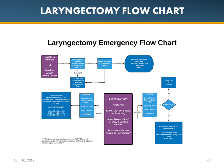Laryngectomy patients are approached very similarly to tracheostomy patients, but there is one very big key difference: we cannot ventilate via the oral pharynx — only via the stoma. Apply PPE, look, listen, feel for breathing, apply oxygen, SpO2, end tidal, cardiac monitor, and assess for respiratory distress requiring intervention. With this patient, we're going down the ventilatory and suctioning pathway.